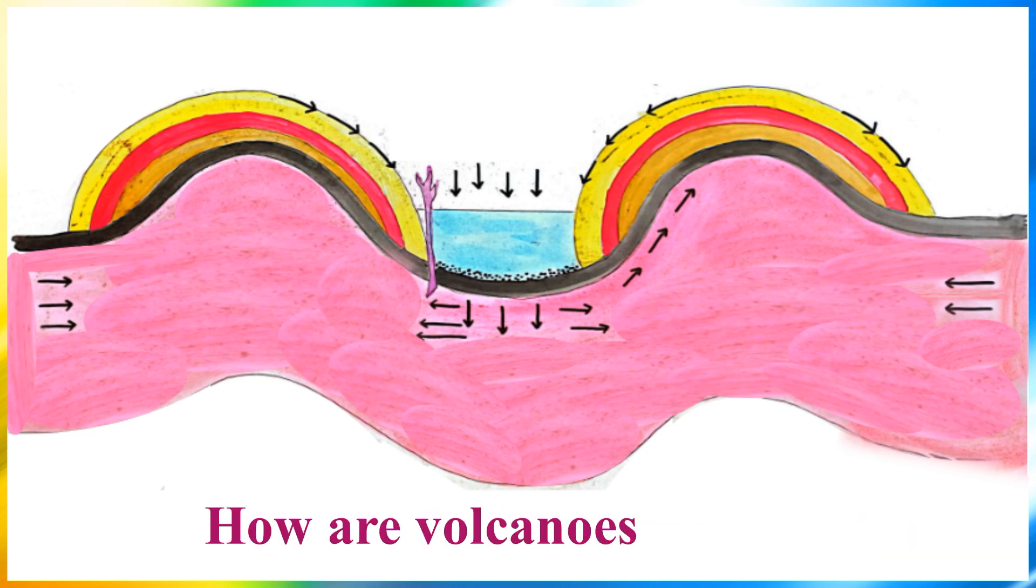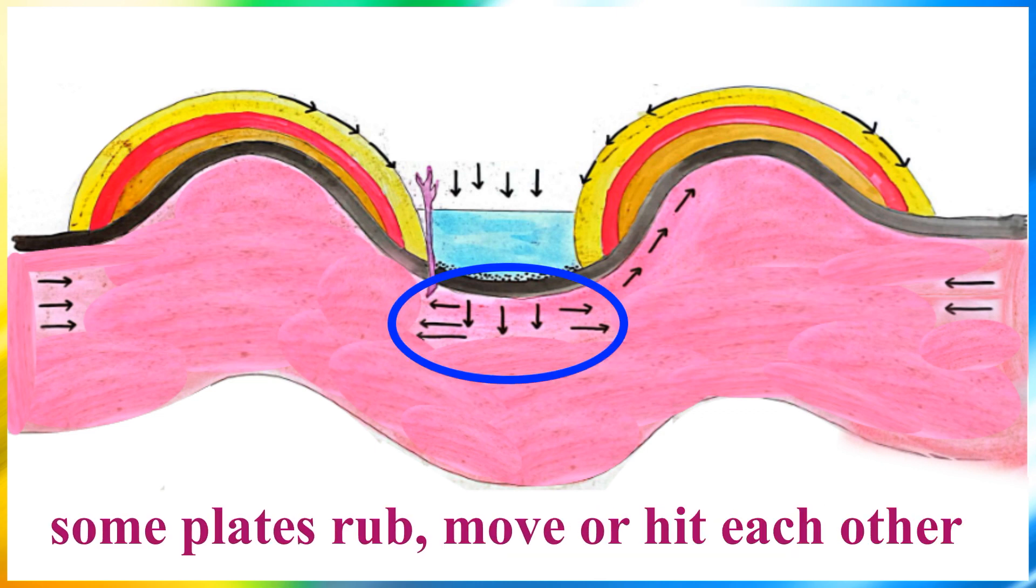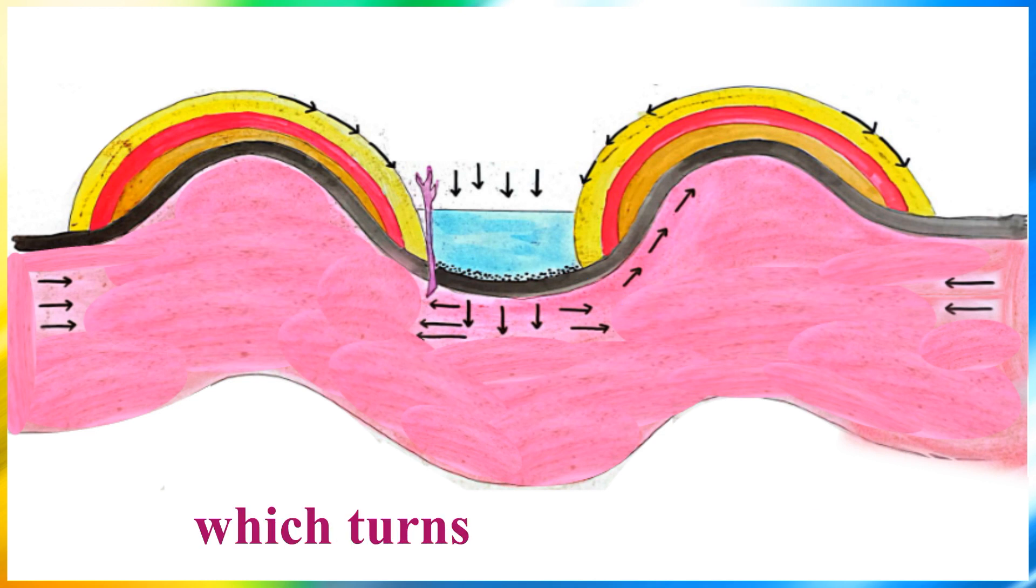How are volcanoes formed? Because our mantle is plastic, some plates rub, move, or hit each other, which turns into volcanoes.